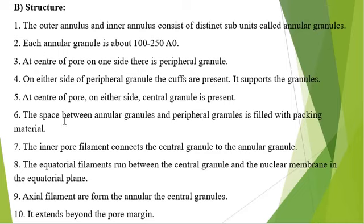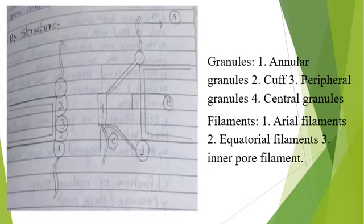The inner filament connects the central granules; the central granules are also associated with the annular granules, and the equatorial filament connects to the central granules. So in the structure of the nuclear pore, mostly granules and filaments are present in the annulus.